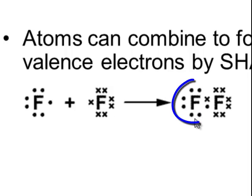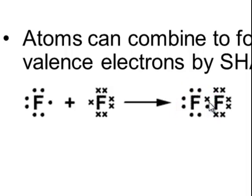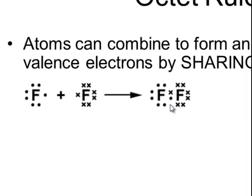The fluorine on the left has one, two, three, four, five, six, seven, eight valence electrons. The two electrons in the middle are being shared by both atoms so that they each have eight valence electrons.